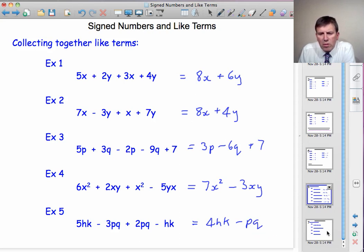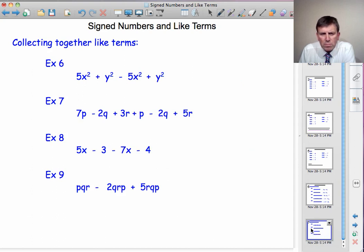Let's move on now to look at 4 more examples. 5x squared minus 5x squared. Well, the x squareds cancel out. 5 take away 5 is 0. But we don't write 0x squared. We just miss it out. It's gone. What about the y squareds? y squared plus y squared is 2y squared. So the answer to this one is just 2y squared.